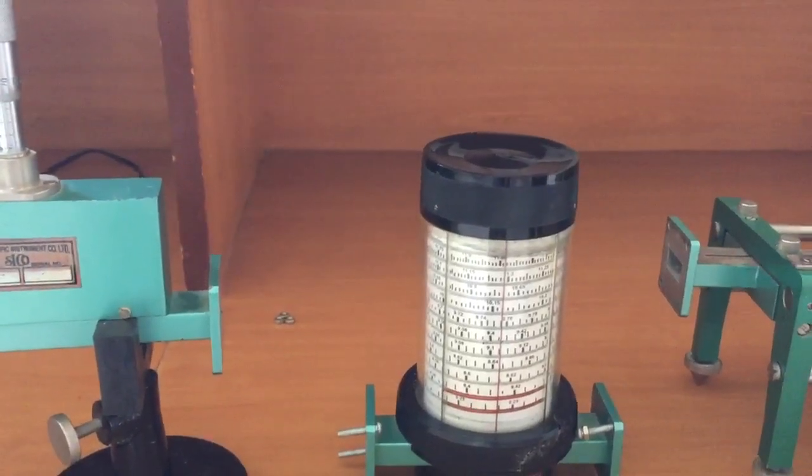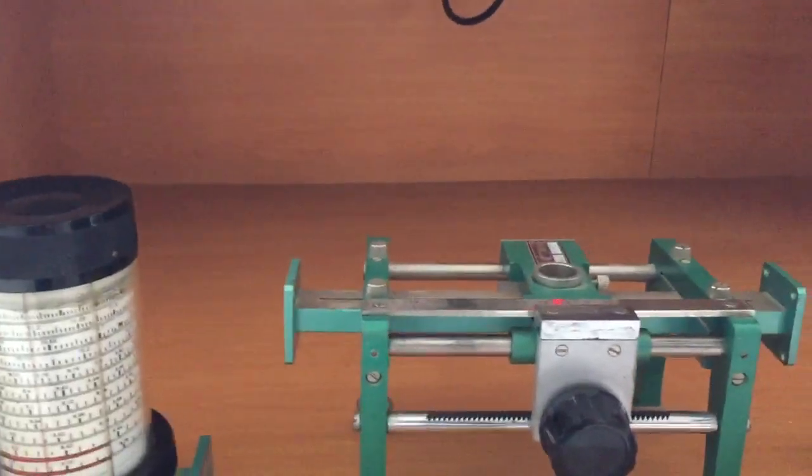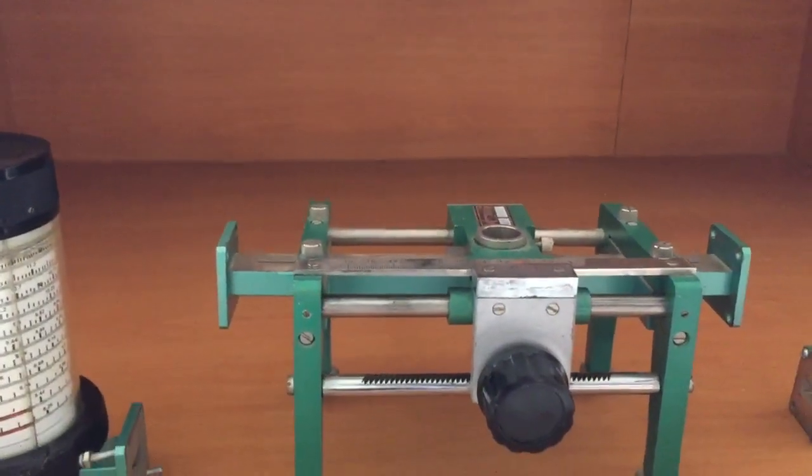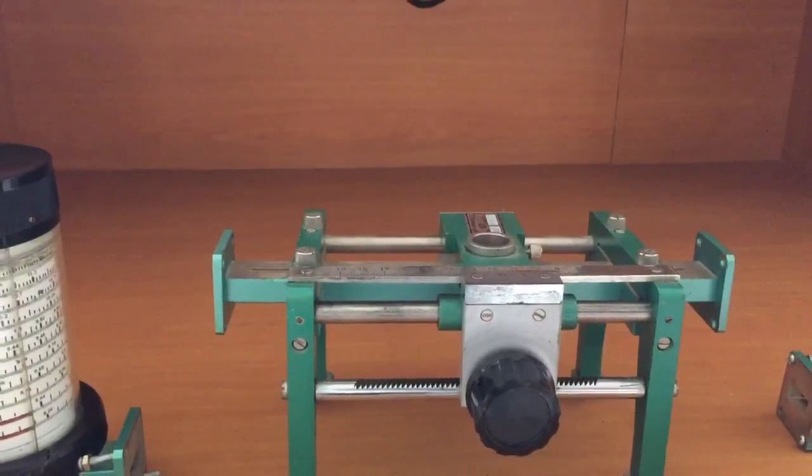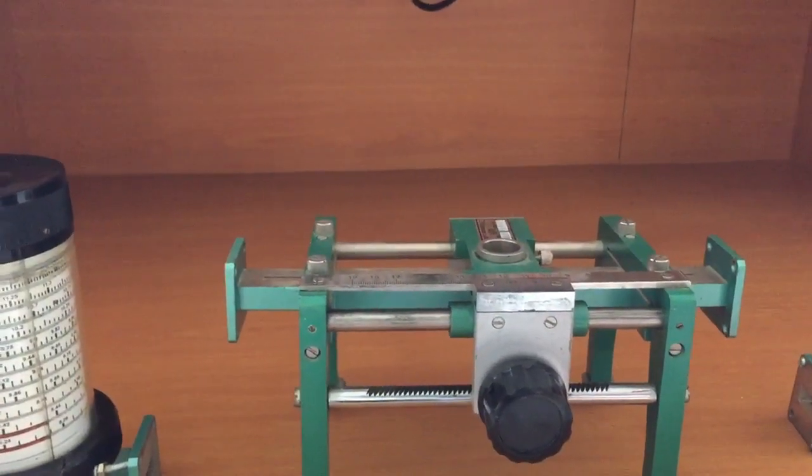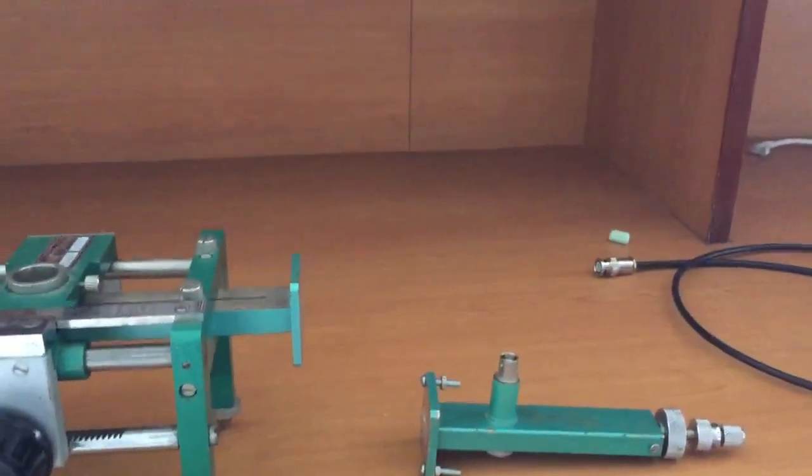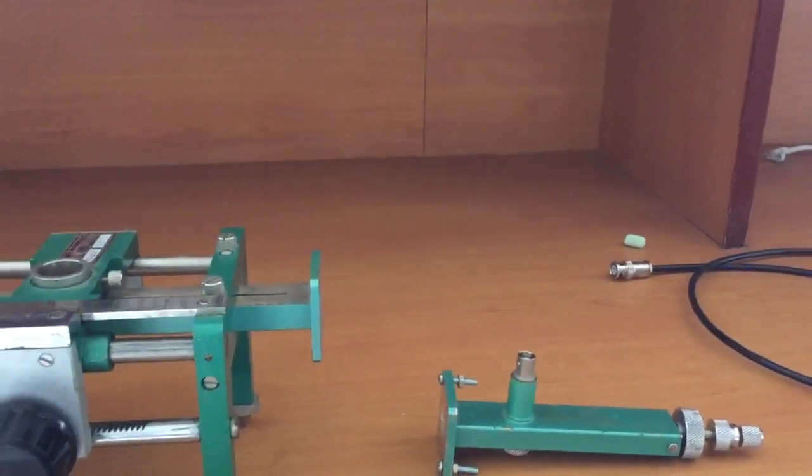The last part is the slotted line carriage where we can see the output in this particular experiment. We also have a detector which we need to connect to the CRO. These are the initial parts of the total experiment.